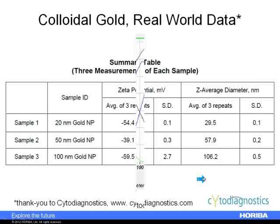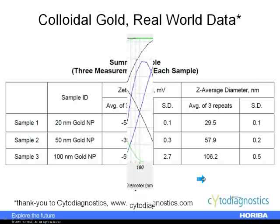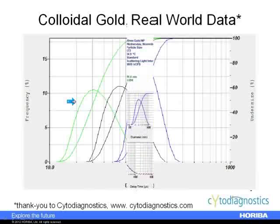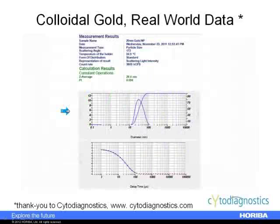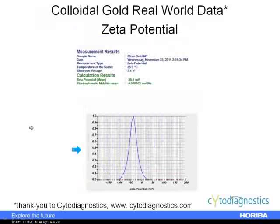This is just showing the three different sizes on the same scale as displayed in the SZ100 software. A typical result from the SZ100 shows the z-average — this is a 30 nanometer nominal gold nanoparticle sample with a nice low polydispersity index. The correlation function shows raw data that gives insight into the quality of the measurement. This is also the zeta potential result for the 50 nanometer gold nanoparticles.